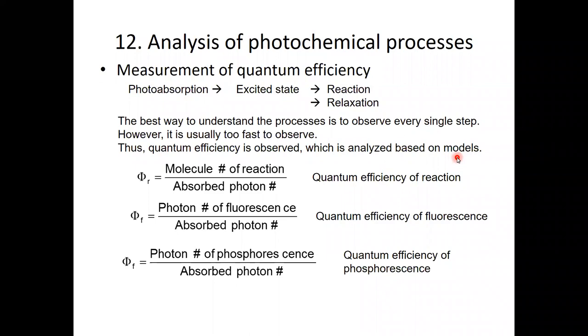Here I will show three of the measurable efficiency. One of them is quantum efficiency of reaction, Φ_R. And this is molecule number, for example product or reactant species number, divided by absorbed photon number.